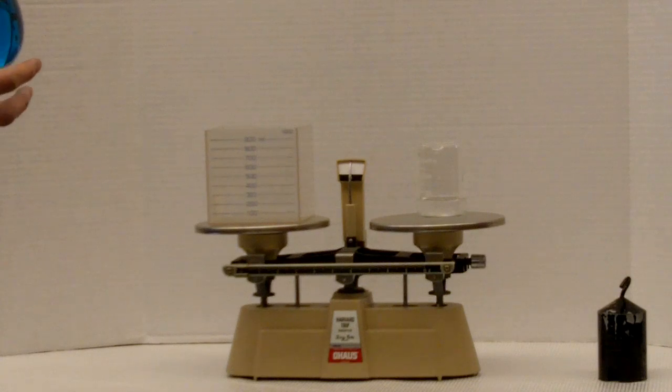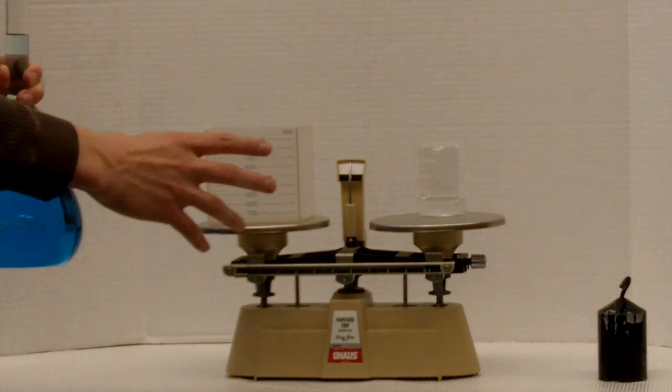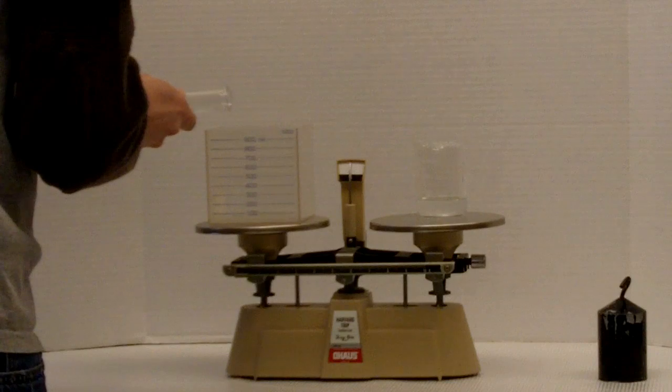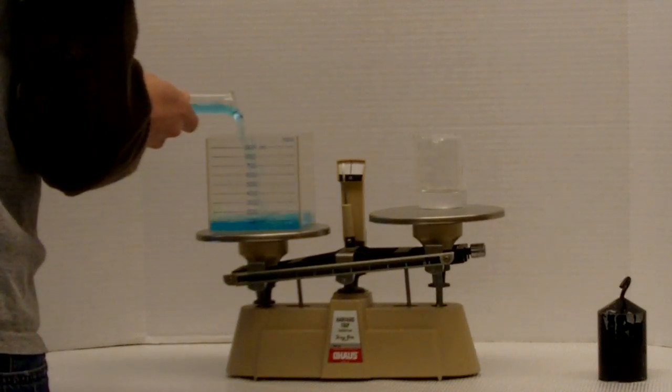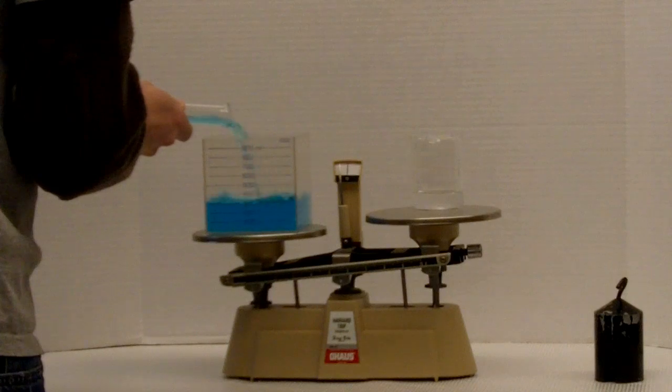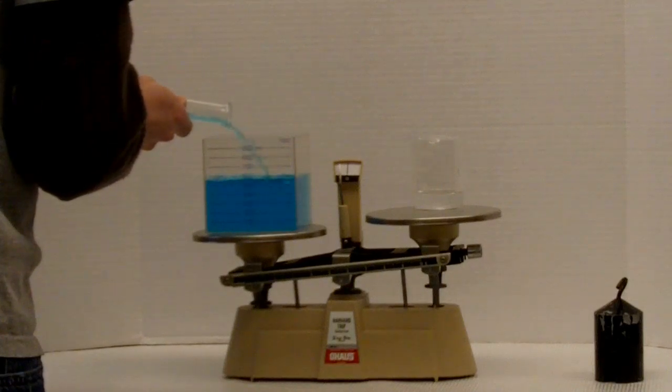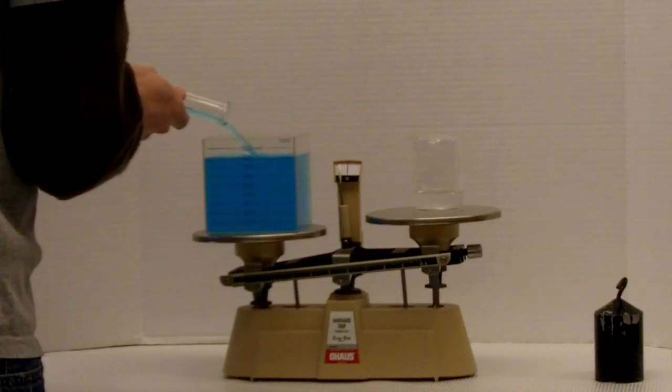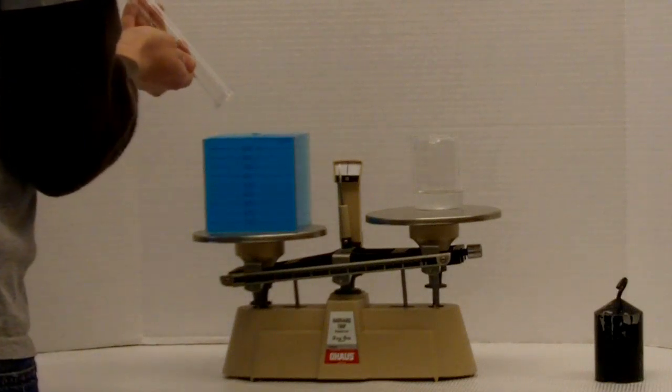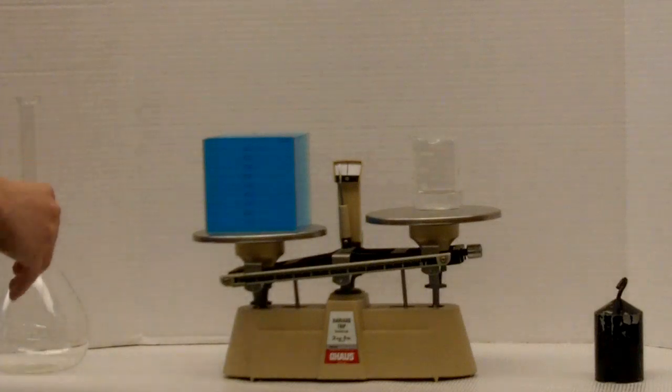And so what happens when you add the 1000 milliliters to the area of 1000 cubic centimeters is that it should fill perfectly. And as you can see, there's no spills.